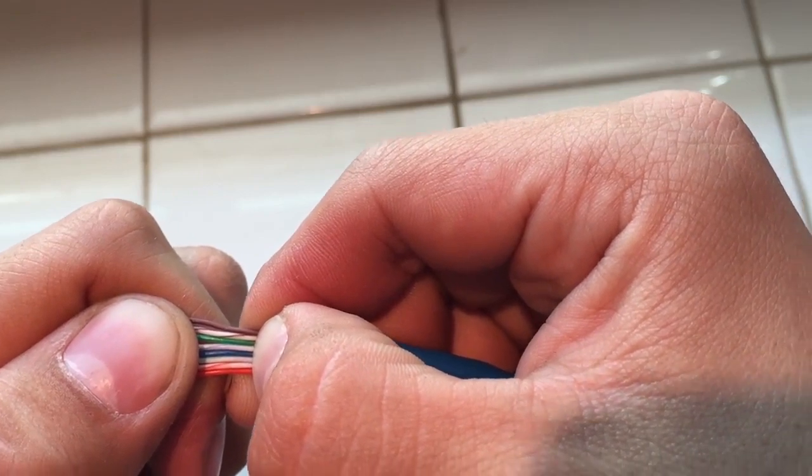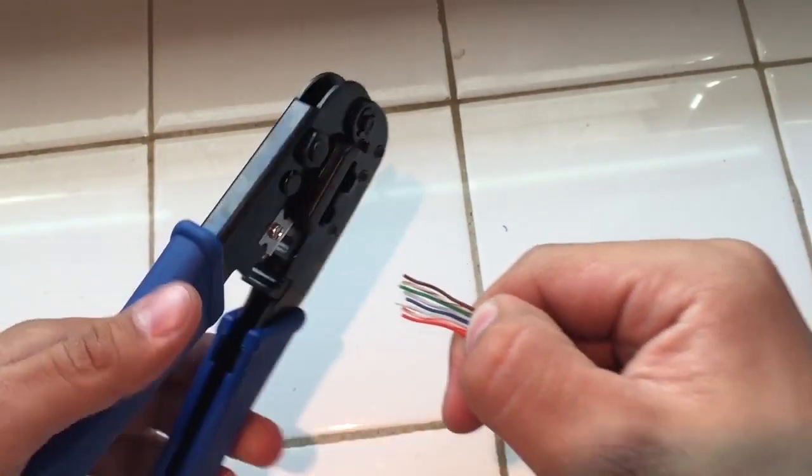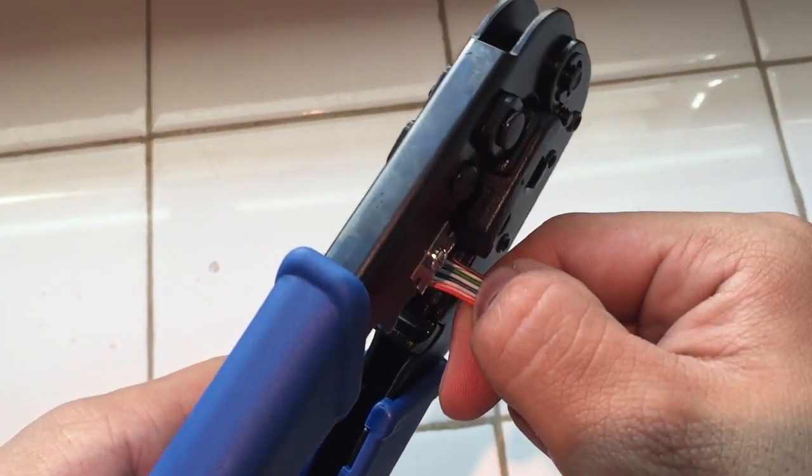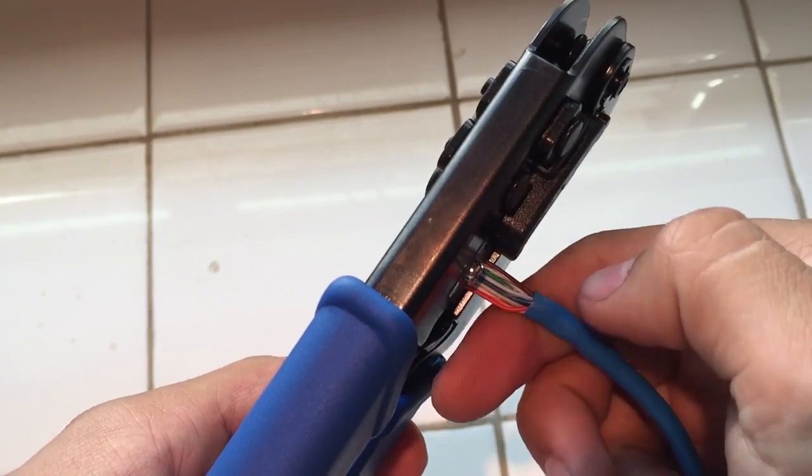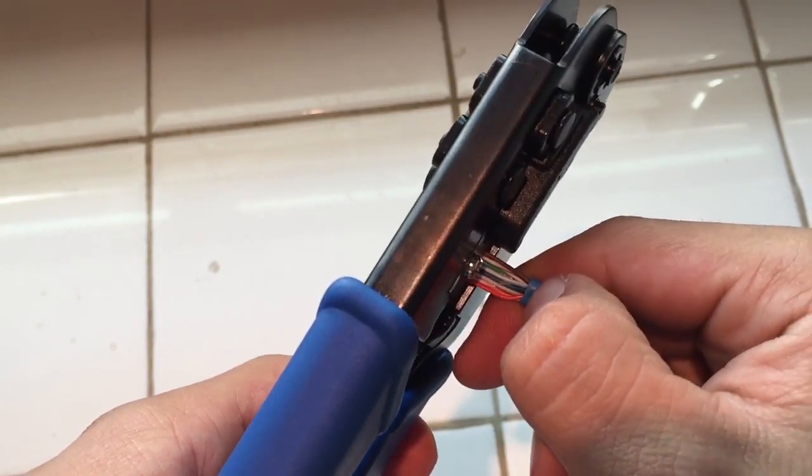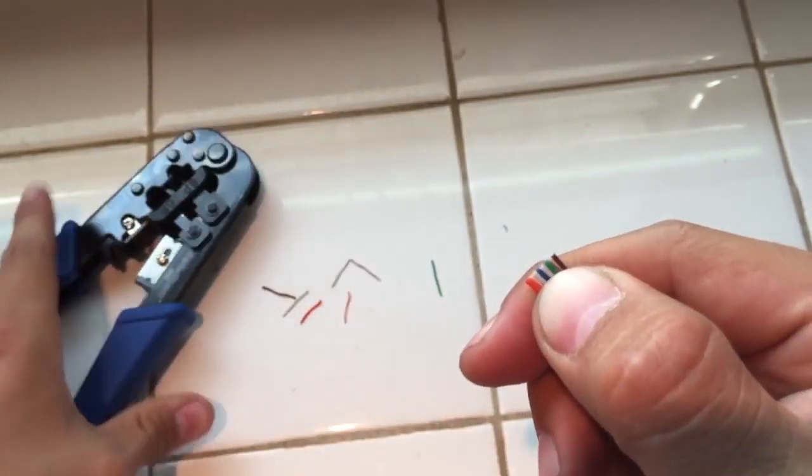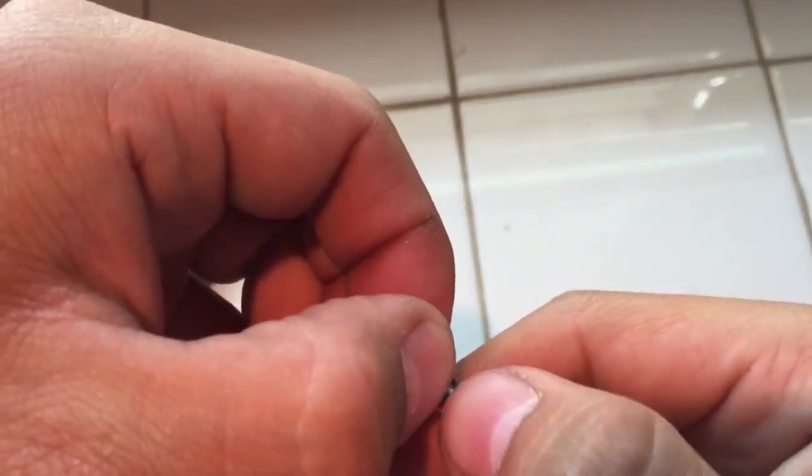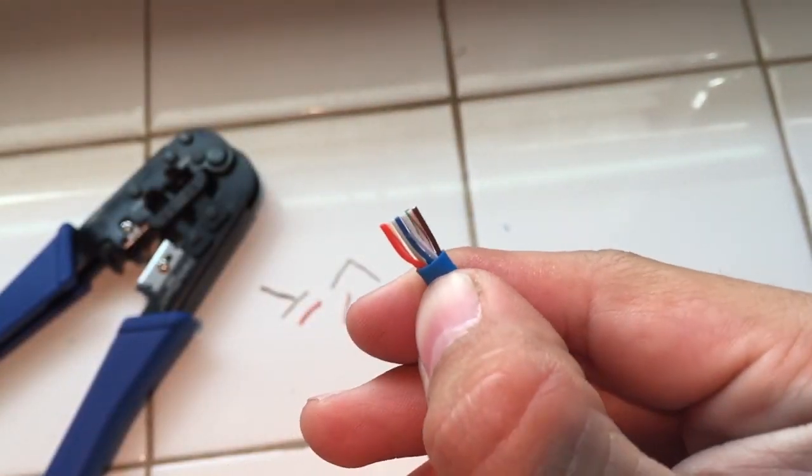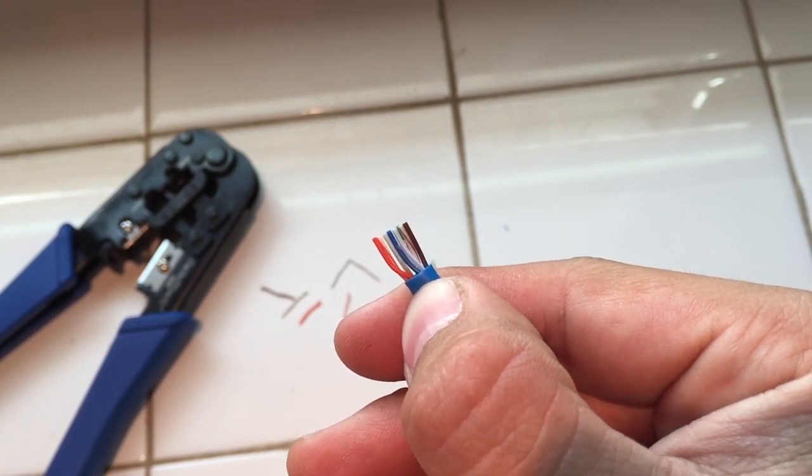Once you're done putting them in order, you're going to cut the excess wire. After you're done cutting, double check. It's very important. As you can see in my case, the orange wire is first when it's supposed to be second.